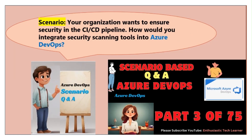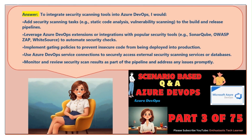Scenario three: your organization wants to ensure security in the CI/CD pipeline. How would you integrate security scanning tools into Azure DevOps? To integrate security scanning tools, I would add security scanning tasks — e.g., static code analysis, vulnerability scanning — to the build and release pipelines. Leverage Azure DevOps extensions or integrations with popular security tools such as SonarQube, OWASP ZAP, and WhiteSource to automate security checks.